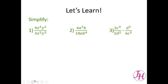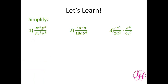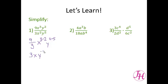Let's simplify three expressions. For number one, we have 9x cubed y squared over 3x squared y to the fifth. We separate these: 9 divided by 3, then x to the 3 minus 2, and y to the 2 minus 5. That gives us 3x to the first, y to the negative third. Because that's a negative exponent, it goes on the bottom of the fraction. So we have 3x over y to the third, and that is our answer.